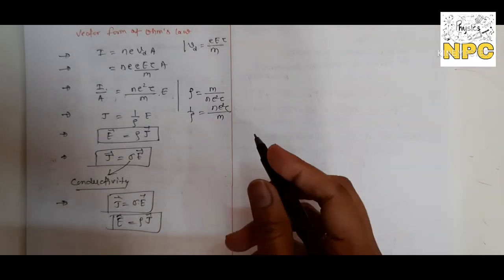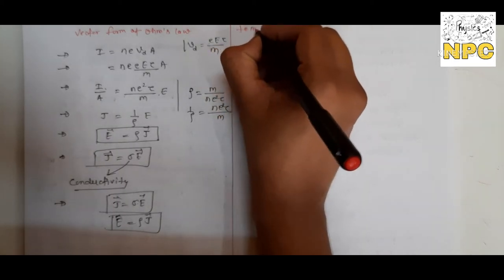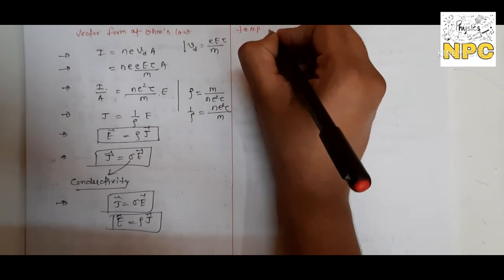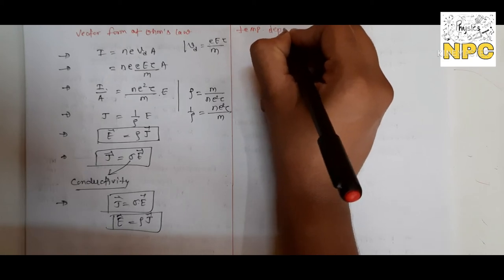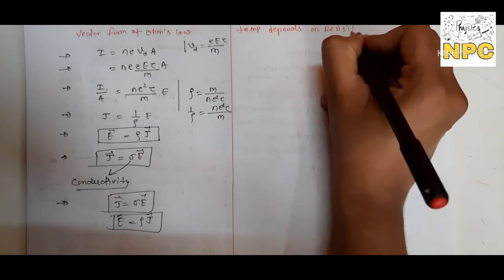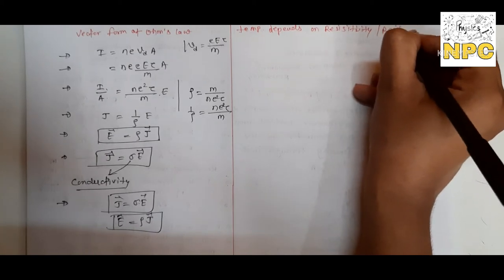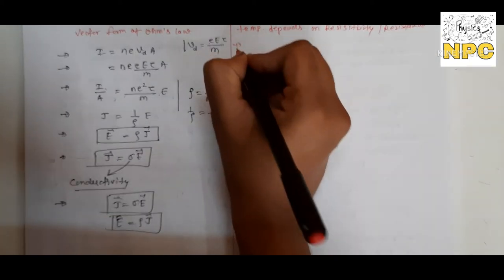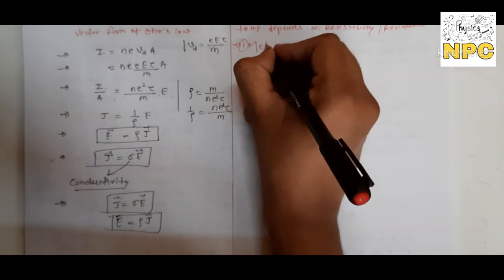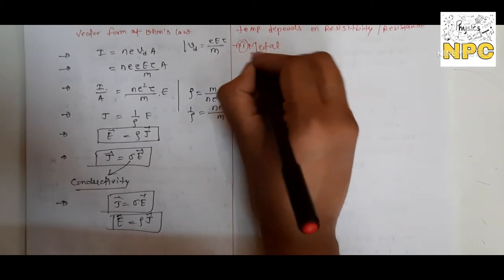Now our second topic for today: temperature dependence of resistance and resistivity. We will see how resistance and resistivity change when temperature is changed. We divide this into three categories. First, we will understand metals — what effect increasing temperature has on the resistivity and resistance of metals.